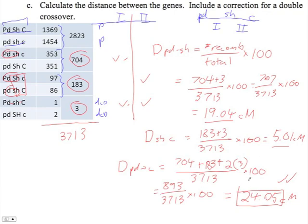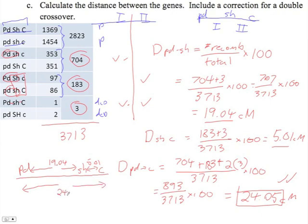Notice that 19.04 is quite large, so if we draw our map — which is usually part of these questions — we put in the PANDA locus, then SHRUNKEN not in the middle but closer to PANDA, and CLIPPED way over here. The distance from PANDA to SHRUNKEN is 19.04 centimorgans. The distance from SHRUNKEN to CLIPPED is 5.01, and the total distance from PD all the way to C is 24.05 centimorgans. That's the distance between the genes, and we've included the correction for double crossovers.